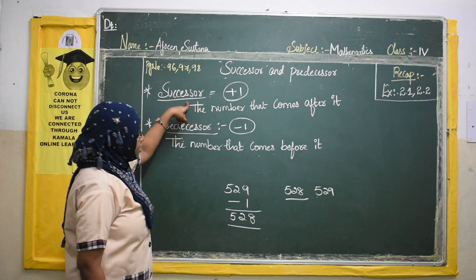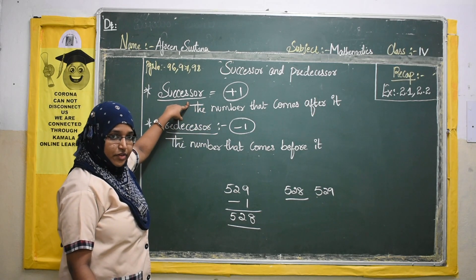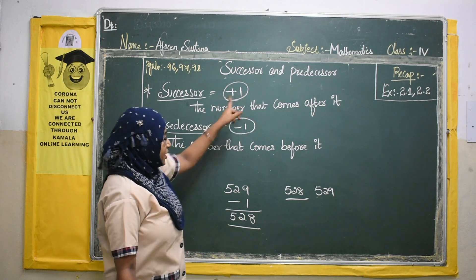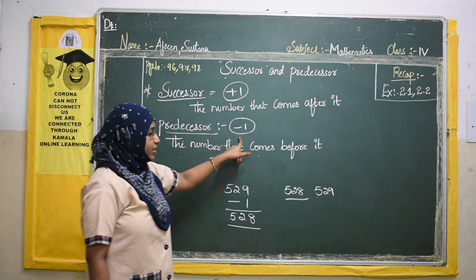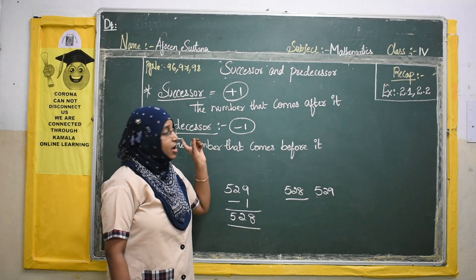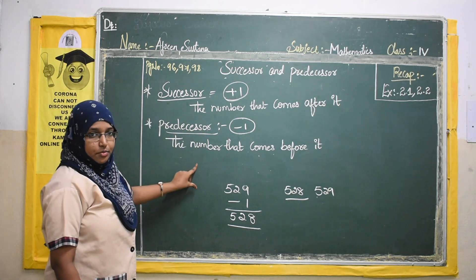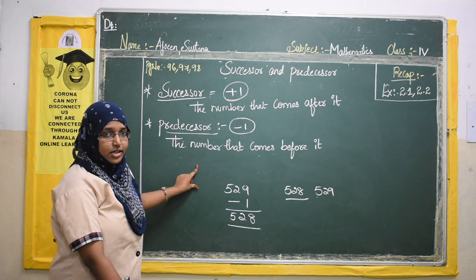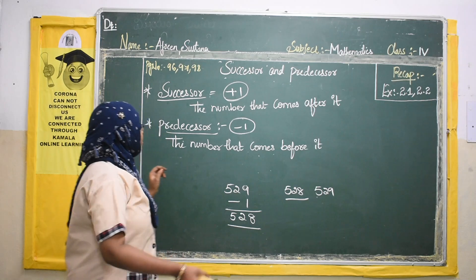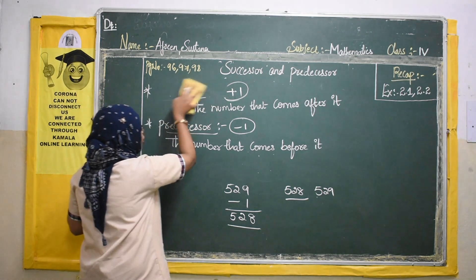So when they ask you to find the successor of a given number, you will add 1. If they ask you to find the predecessor, you will subtract 1 from the given number. This is what successor and predecessor are. I think it is very clear, students. Let us move to our next topic.